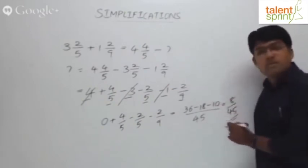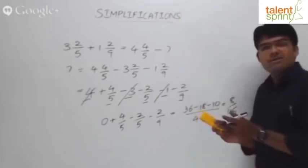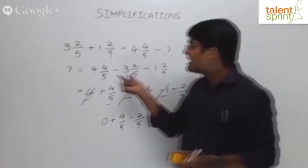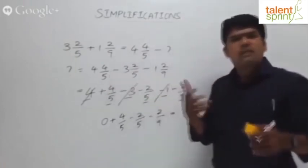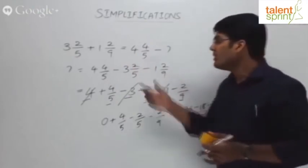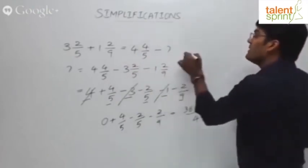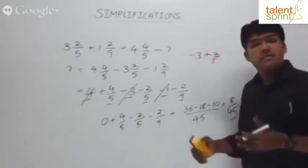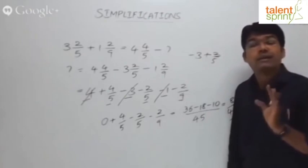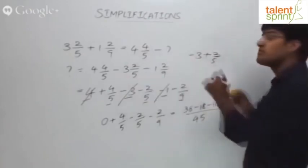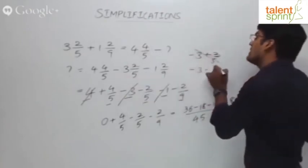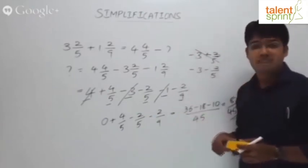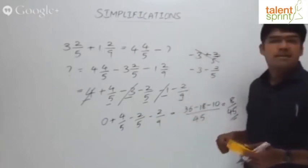Practice this method: split the integer part and the fraction part separately. One important caution: be careful with the negative sign. In a hurry, students write minus 3 and 2/5 as minus 3 plus 2/5 — that is wrong. It must be minus 3 minus 2/5. Avoid this mistake and you will get answers much faster. The correct answer is 8/45.